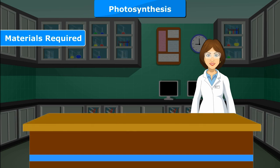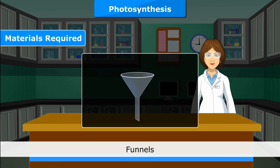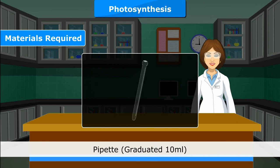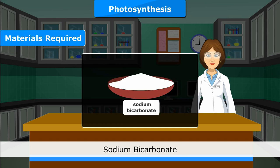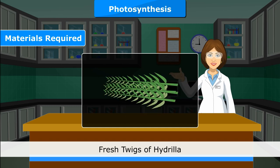Materials required: Beakers, funnels, glass rod, test tubes, pipette, graduated 10 ml, sodium bicarbonate, and fresh twigs of hydrilla.